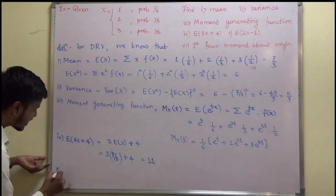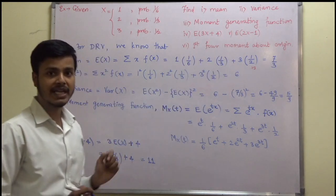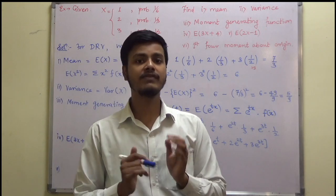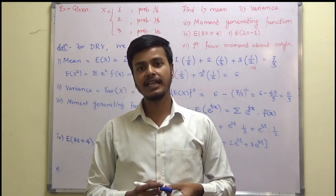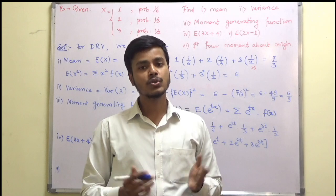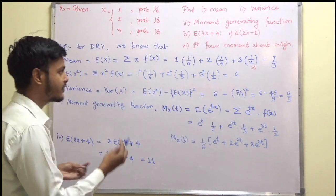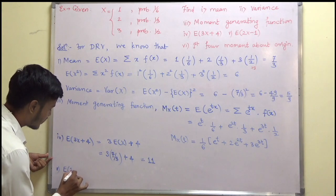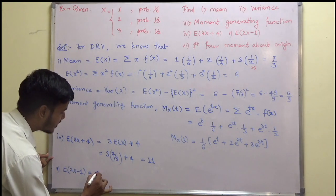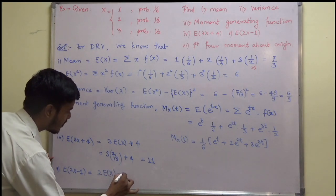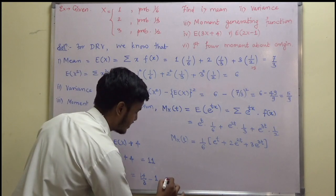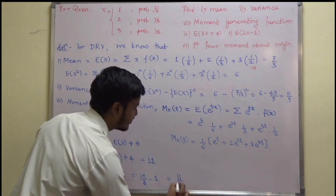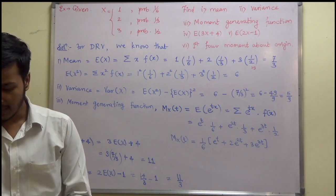The next one we have to find is E(2X−1). I want you to pause the video for a few seconds, try to compute E(2X−1), and then resume. E(2X−1) = 2·E(X) − 1 = 2 × (7/3) − 1 = 14/3 − 1 = 11/3. So we got 11/3.